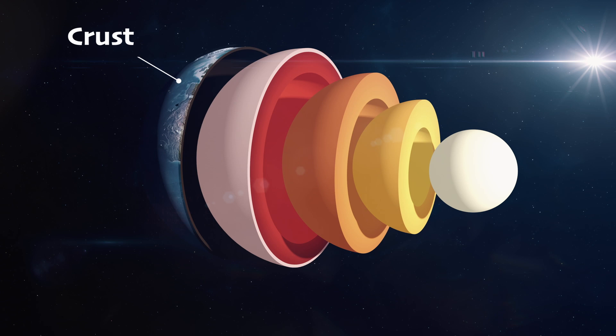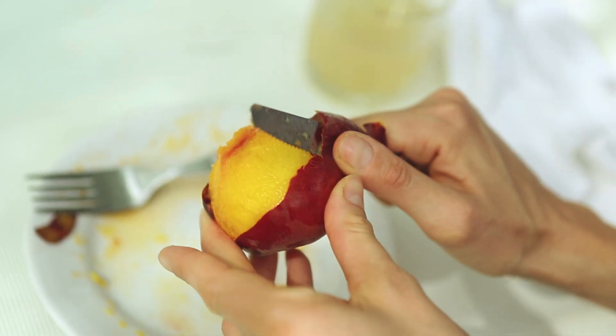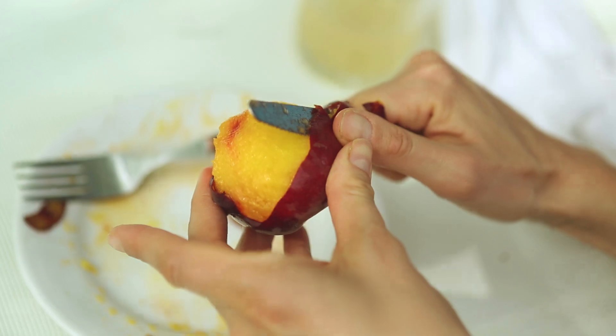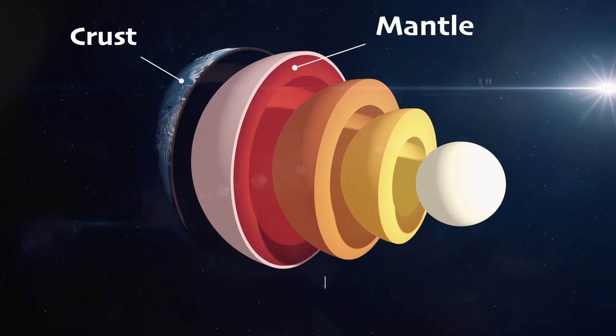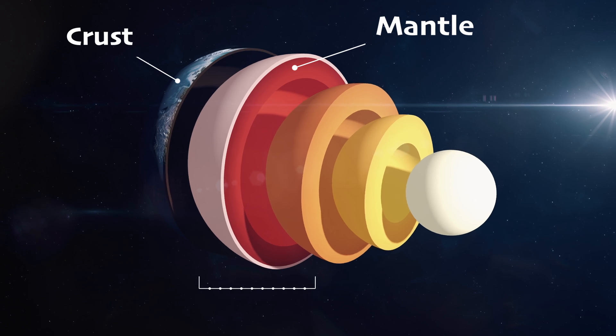Right beneath the crust is the mantle. Think of it as the flesh of the peach, just less juicy and delicious. The mantle is much thicker than the crust and is made up of semi-solid rock that can flow very slowly.